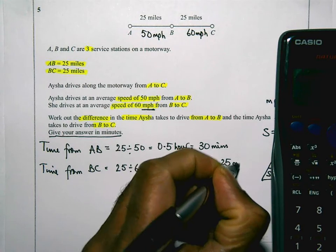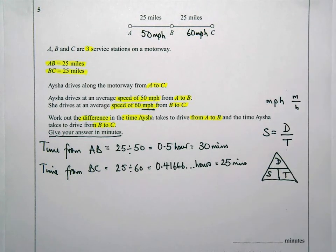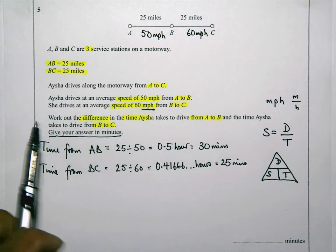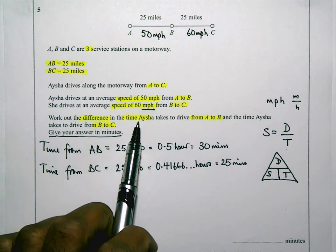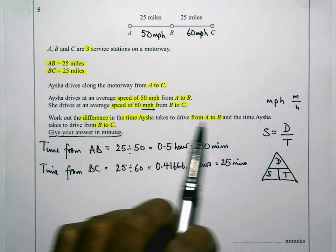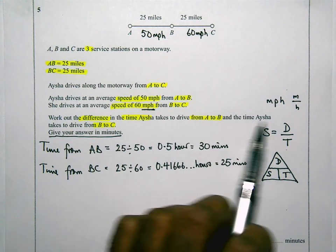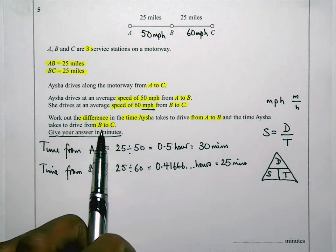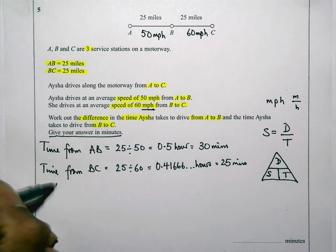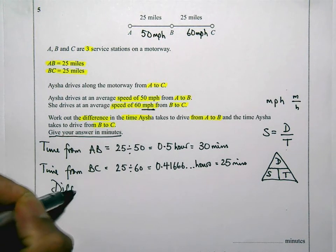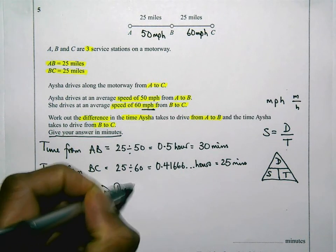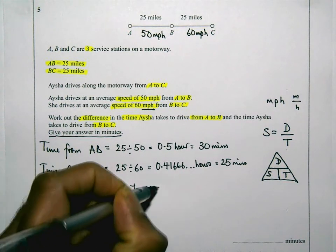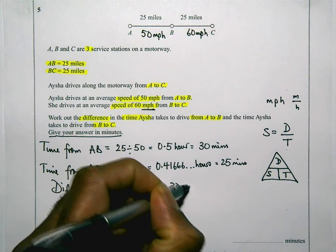So just let's read the question again so we can remember what they want us to find. Work out the difference in the time Aisha takes to drive from A to B and the time that Aisha takes to drive from B to C. So the difference in the times is going to be 30 minutes take away 25 minutes.